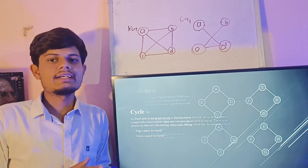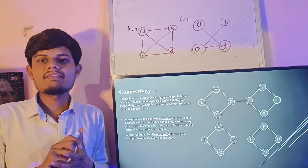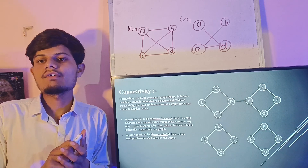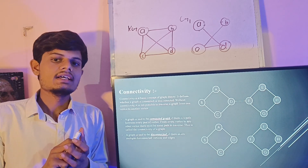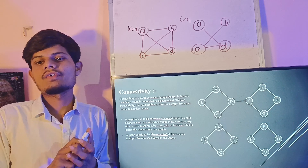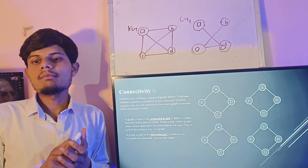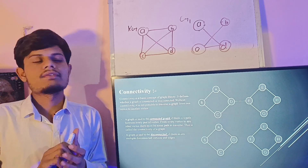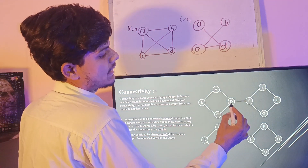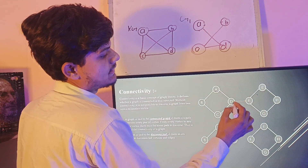Now let's move to our next topic, that is connectivity. Connectivity is a basic concept of graph theory. It defines whether a graph is connected or disconnected. Without connectivity, it is not possible to traverse a graph from one vertex to another. A graph is said to be connected if there is a path between every pair of vertices. There must be some path to traverse — this is called connectivity of graph. Here is an example of a connected graph where the graph is connected with edges D and F, and these two graphs are connected with H, D and F.